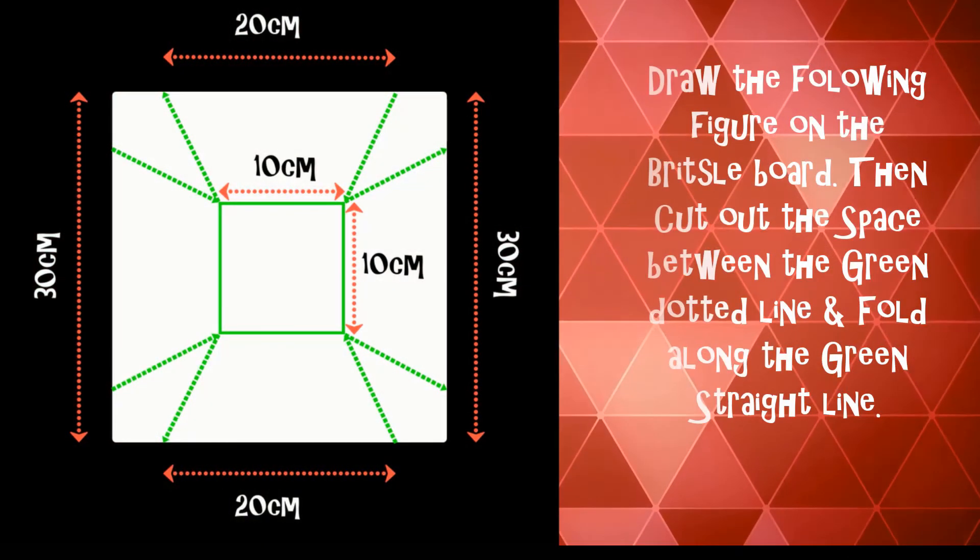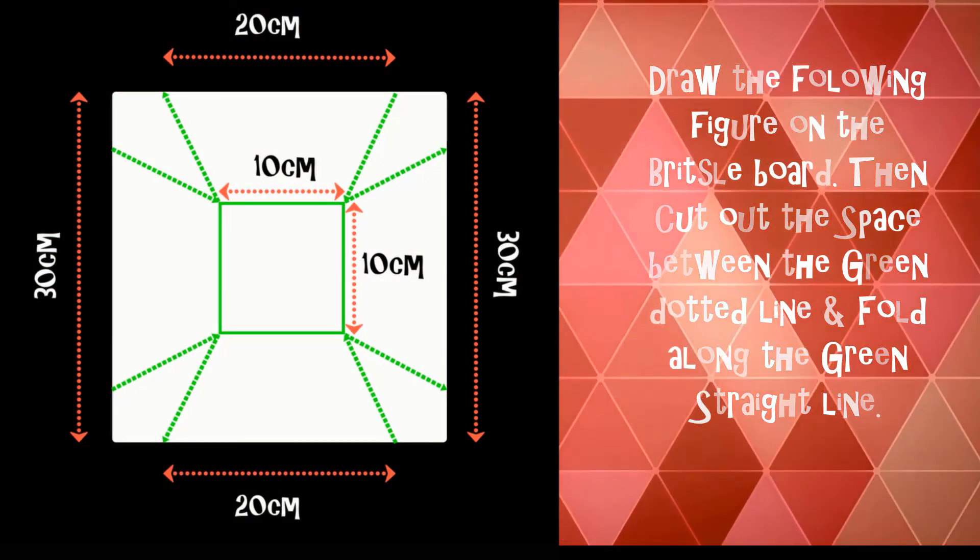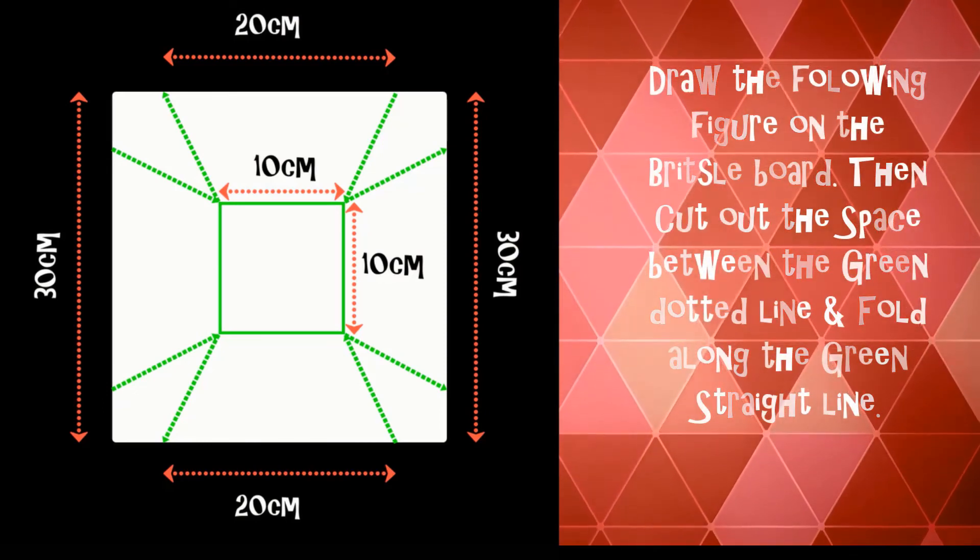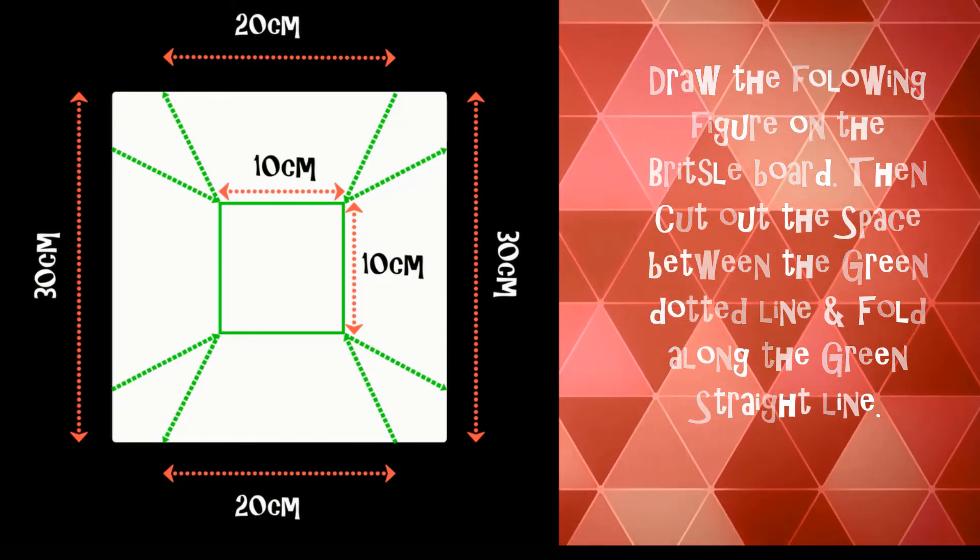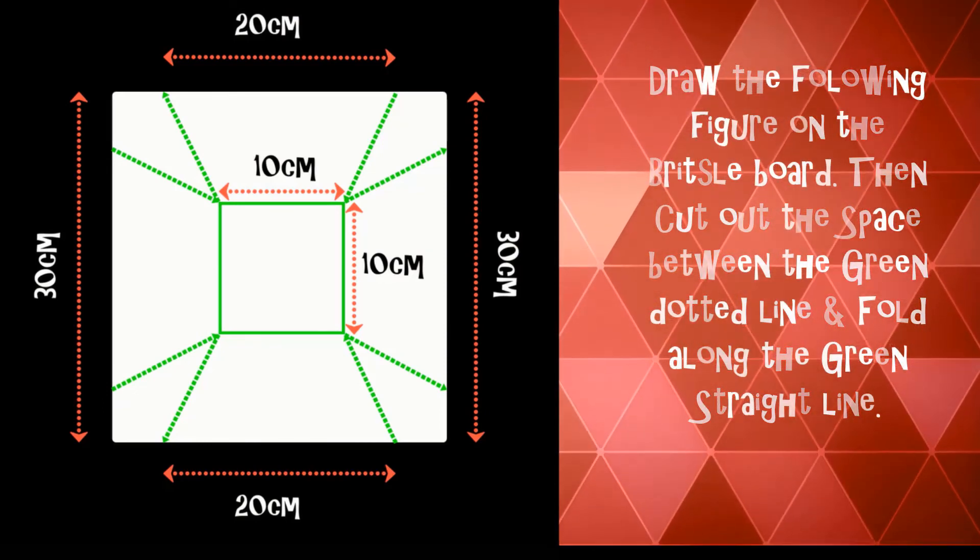Draw the following figure on the bristle board, then cut out the space between the green dotted line and fold along the green straight line.